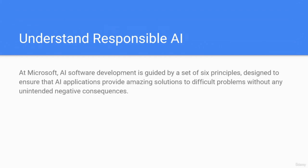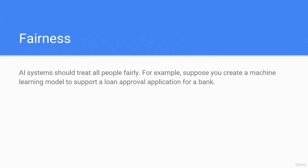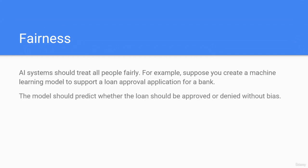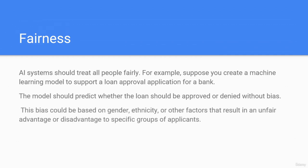Microsoft AI software development is guided by a set of six principles designed to ensure that AI applications provide amazing solutions to difficult problems without unintended negative consequences. First, fairness: AI systems should treat all people fairly. For example, a machine learning model supporting a loan approval application should predict whether a loan should be approved or denied without bias based on gender, ethnicity, or other factors that result in unfair advantage or disadvantage to specific groups of applicants.